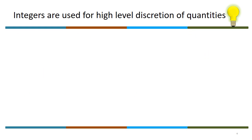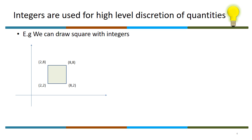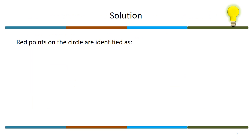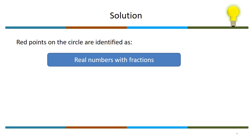Integers are used for high level discretion of quantities. With integers we can draw a square but not a circle. The problems of the world cannot be solved only with integers. Can we identify the coordinates of the red points on a circle? We require real numbers with fractions.